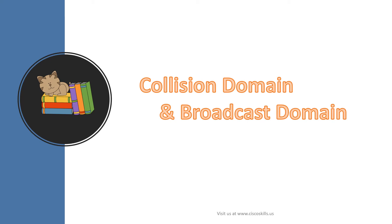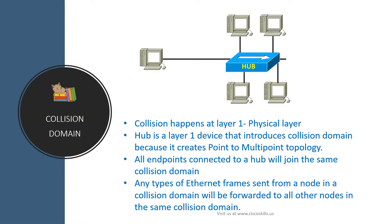In this video we talk about collision domain and broadcast domain. Let's get started with collision domain. As you know, collision happens at layer one, or physical layer, and a hub is a layer one device that introduces collision domain because it creates a point-to-multipoint topology.